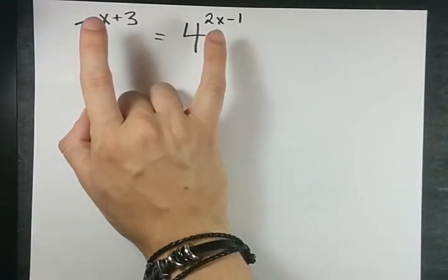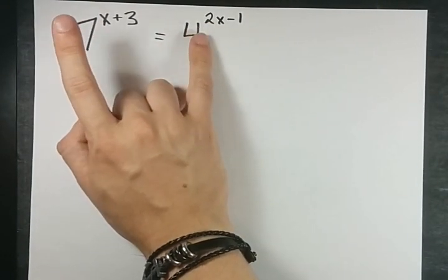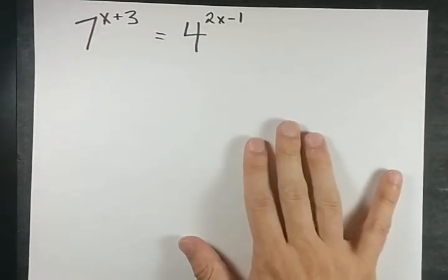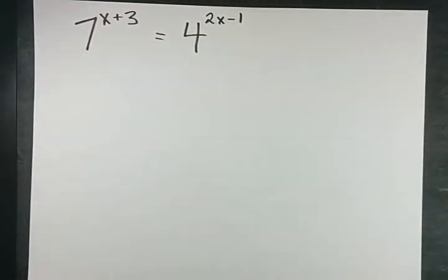Instead, there's nothing that we can turn 7 into to make it 4. We can't turn 4 into 7 with exponents, at least not super easily. So we need another way to solve this. Let me show you how we do it.